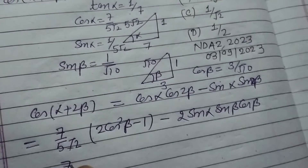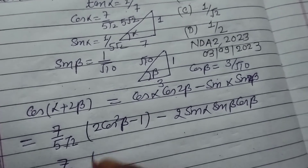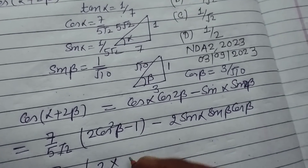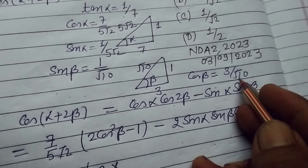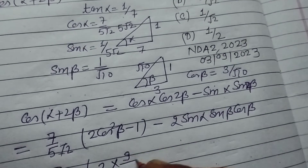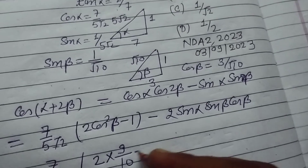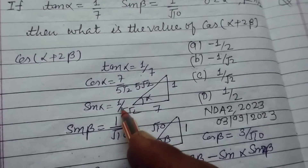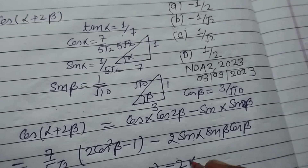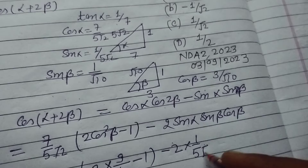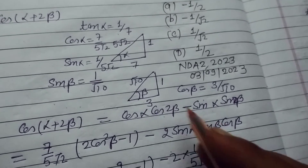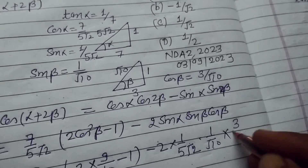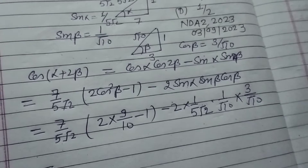Putting in all the values: cos 2β uses cos β = 3 upon √10, so cos 2β = (3/√10)² × 2 - 1 = 9/10 × 2 - 1. For the second term, 2 sin α sin β cos β gives 2 × (1/5√2) × (1/√10) × (3/√10).